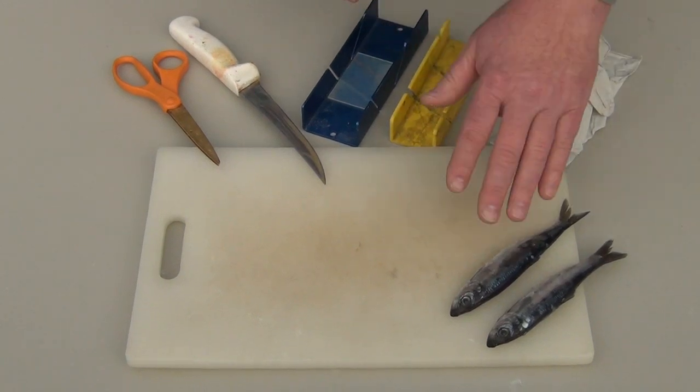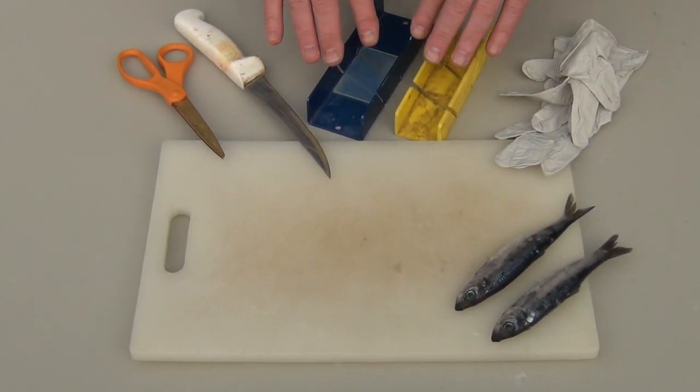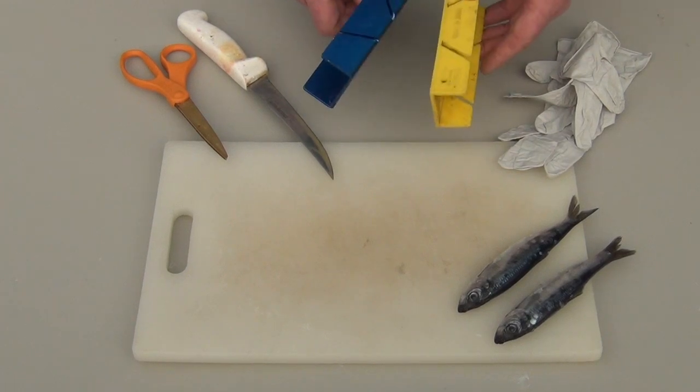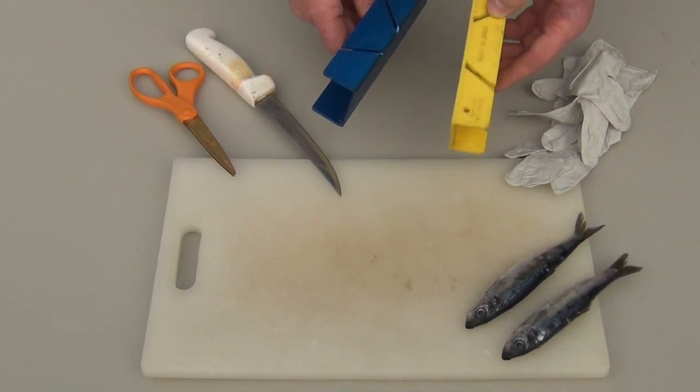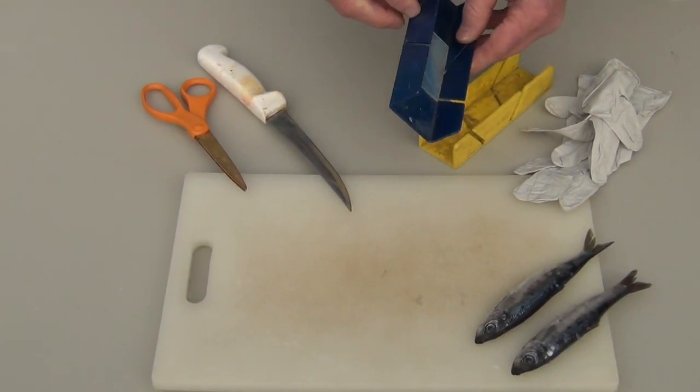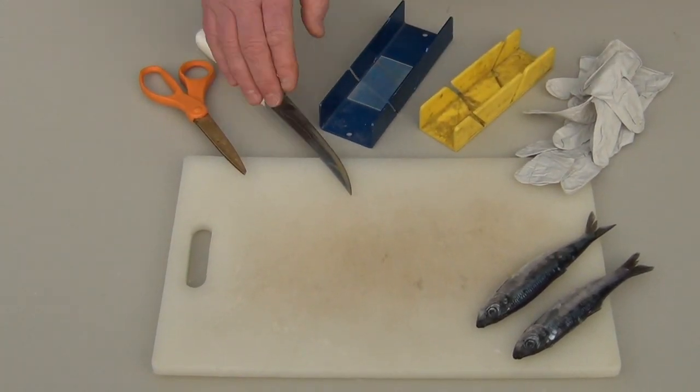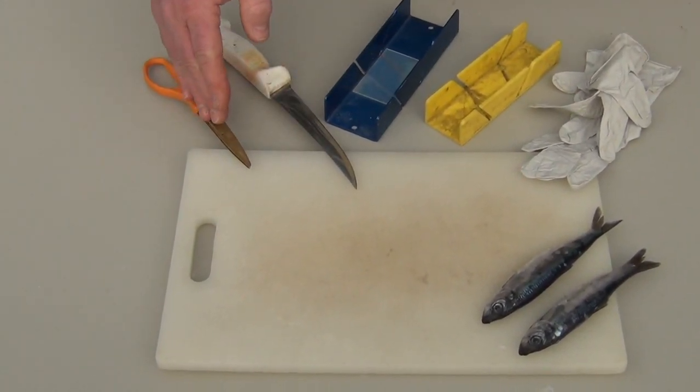You guys need to use a jig when you're cutting your herring. There's a couple styles on the market today: inexpensive plastic, a little more spendy aluminum. They both work very well, just depends on how much money you want to spend. You need a knife to cut and you're also going to need some scissors.